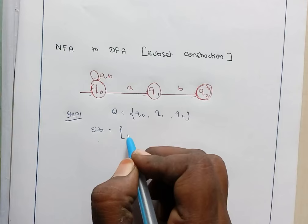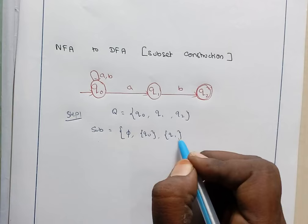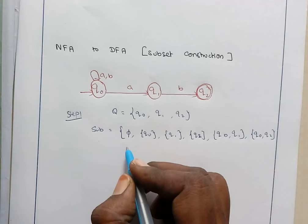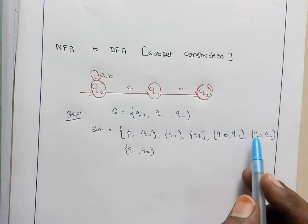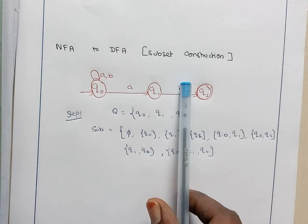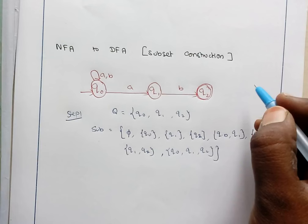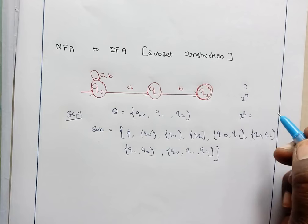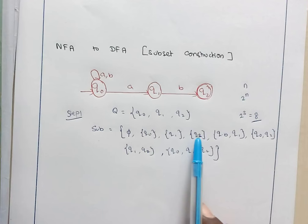The subsets start with null, then Q0 alone, Q1 alone, Q2 alone. Then the two-element combinations: Q0 with Q1, Q0 with Q2, and Q1 with Q2. And the last set is the full set {Q0, Q1, Q2}. You remember that if a set contains n elements, there are 2^n possible subsets. Here we have 3 elements, so 2^3 = 8 possible subsets — and indeed we have all 8.